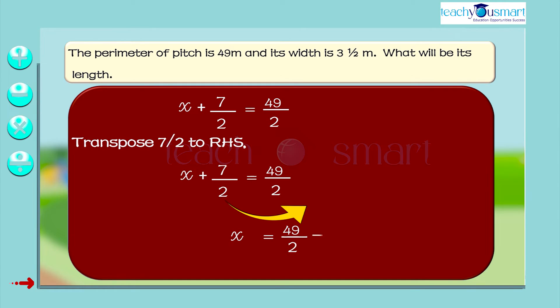Transpose 7 by 2 to RHS. x equals 49 by 2 minus 7 by 2 equals 42 by 2 equals 21. Therefore, the length of the pitch is 21 meters.